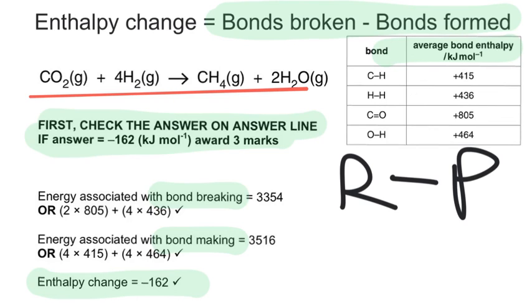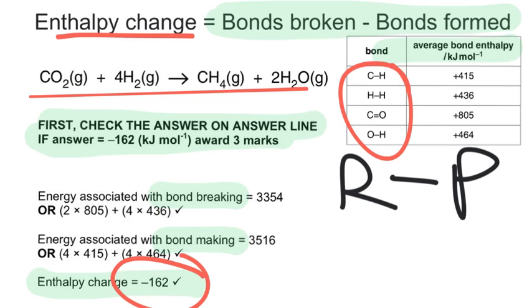And the reason for that is these average bond enthalpies, they're not specific to those molecules in the equation. And so nothing to do with heat loss or anything else, that's a practical consideration. The reason that this answer of -162 may be different from a data book answer for this particular reaction's enthalpy change, is because these values are not specific to the molecules in these equations.